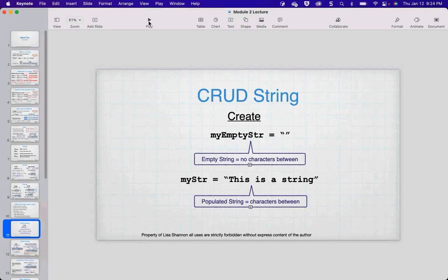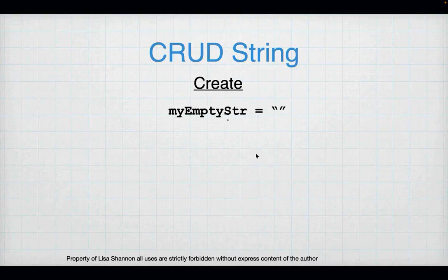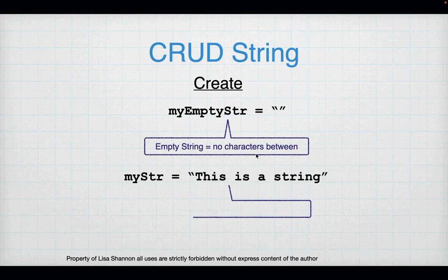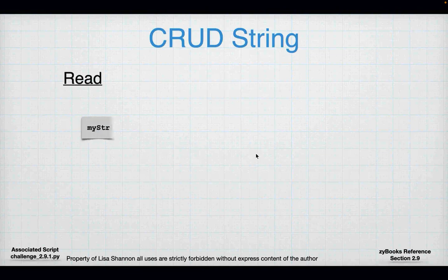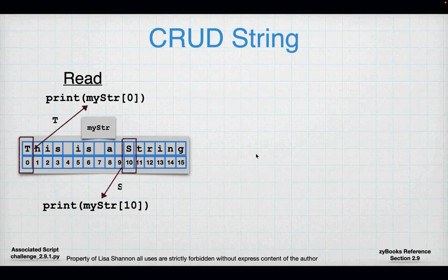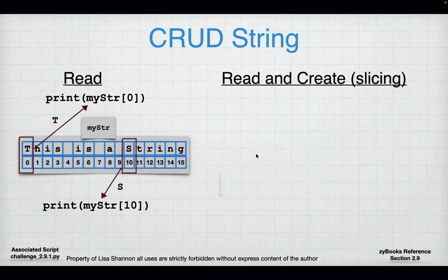To create a string, I have a variable called 'my_empty_str' on the left-hand side of a single equal sign, and on the right-hand side I have two quotes with absolutely nothing in between — that's an empty string. I can also create a populated string, like 'this is a string'. To read a string, use the same square bracket syntax as a list. 'my_str[0]' will print T. 'my_str[10]' gives S.